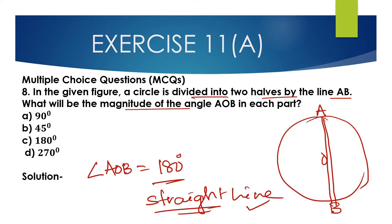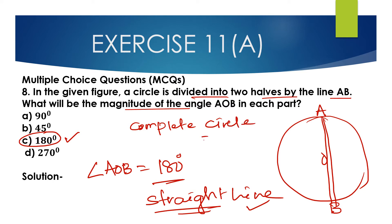A straight line always measures 180 degrees. So Option C is the correct option. A circle is divided into two halves by the line AB. The magnitude of the angle AOB in each part will be 180 degrees. The whole circle is 360 degrees, and a semicircle is 180 degrees.